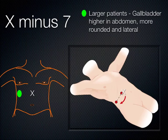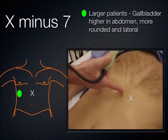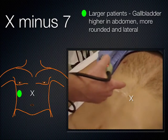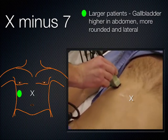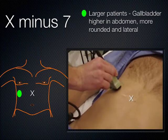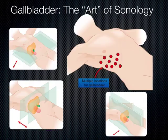In larger patients, finding the gallbladder is harder. Use the X-7 approach: X stands for the xiphoid process, 7 stands for 7 centimeters to the right laterally. Place the probe perpendicular to the patient's skin, and more often than not you'll find the gallbladder there. This is also called the intercostal view. In really large patients it may be X-10 or X-12. This is the true art of sonology — finding that gallbladder sometimes.